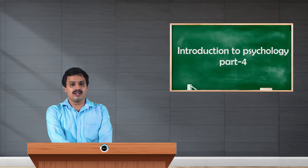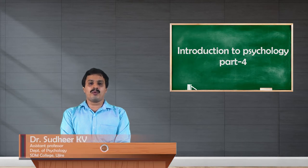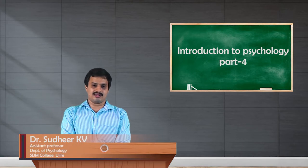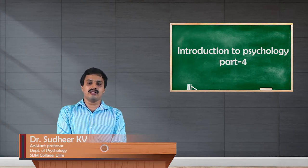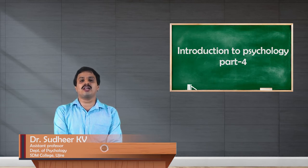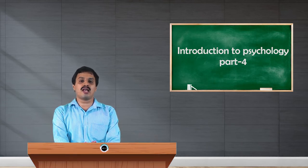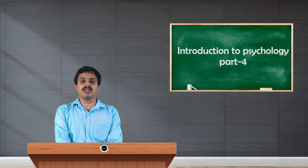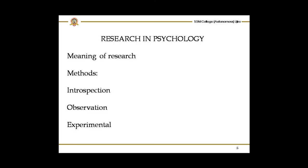Hello students. Now I am going to continue about experimental method. Experimental method is a method in psychology or research psychology which mainly studies about human behaviors in a controlled or laboratory setting. Experimental method mainly studies the behavior of an individual that is based on cause and effect relationship. It may study about antecedent, consequence, and behavior.